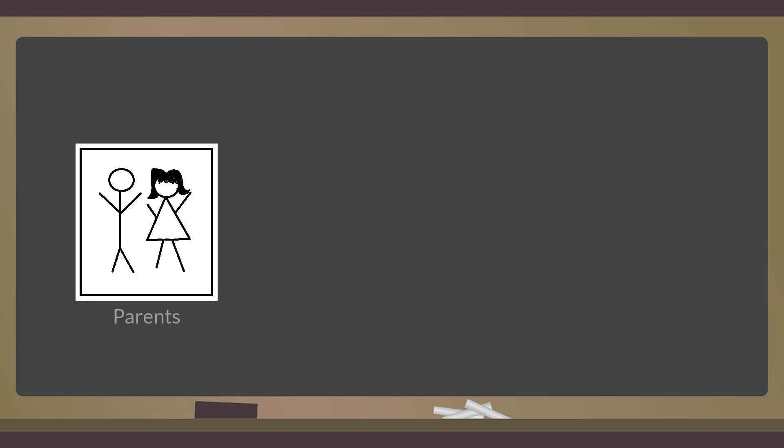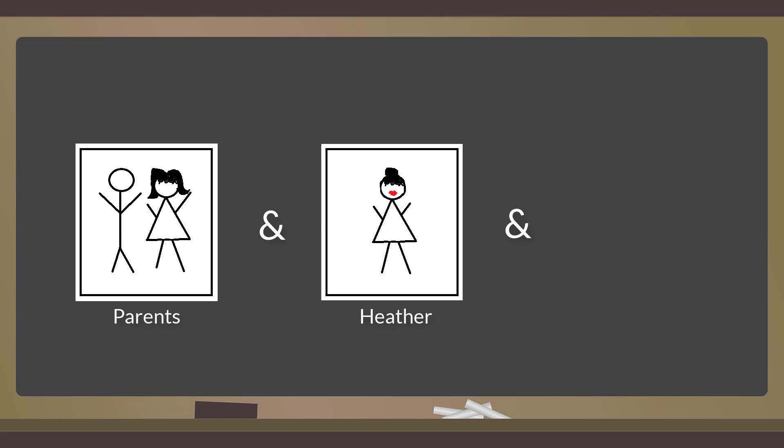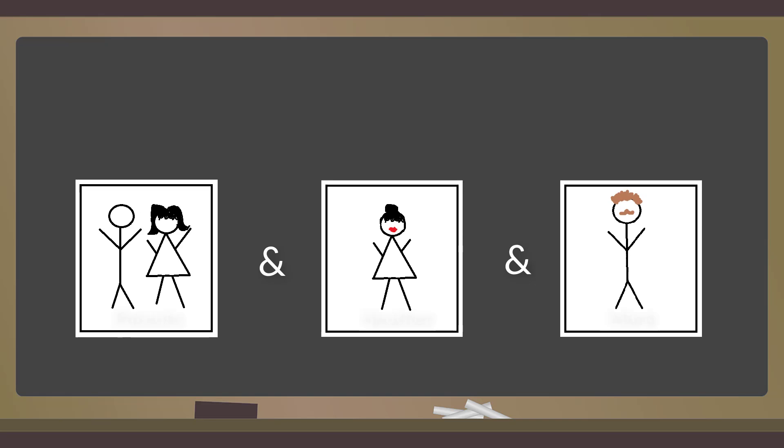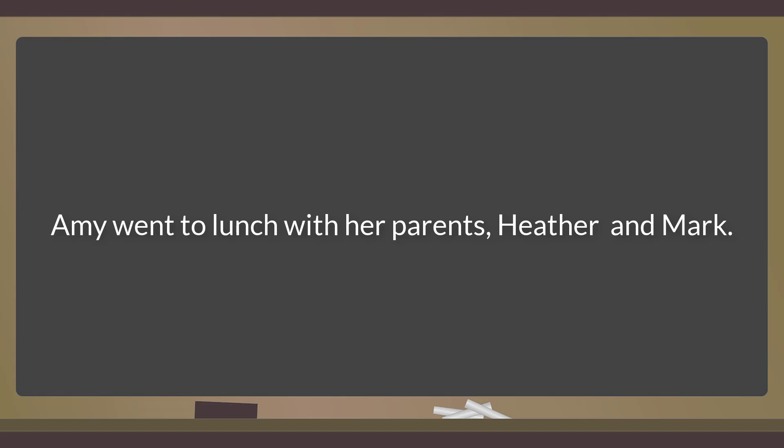But if the sentence is trying to list the people Amy had lunch with, being her parents and two more people, Heather and Mark, then omitting the comma before the AND in this list creates ambiguity. In order for it to be clear to the reader that Amy is meeting up with her parents and two others for lunch, the Oxford comma is necessary.